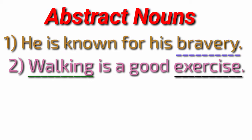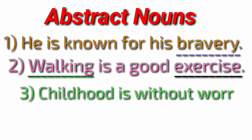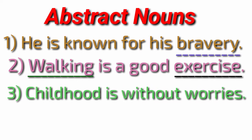Childhood is without worries. In the given sentence there are two abstract nouns. Childhood — from child it has become childhood. Child is a common noun; childhood is an abstract noun. And worries is also an abstract noun.